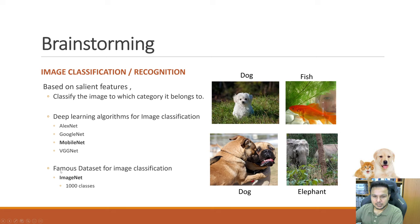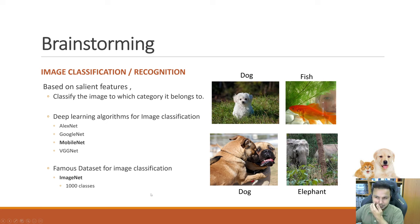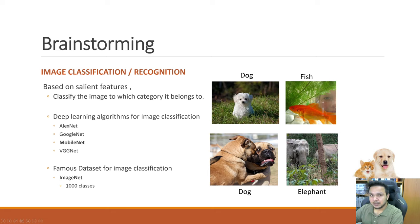You might have heard other words similar to image classification, such as object detection. For example, if an image contains both a cat and a dog as salient features, it's unfair to classify it as just one. Because both candidates have the same salient feature, we solve this with object detection.